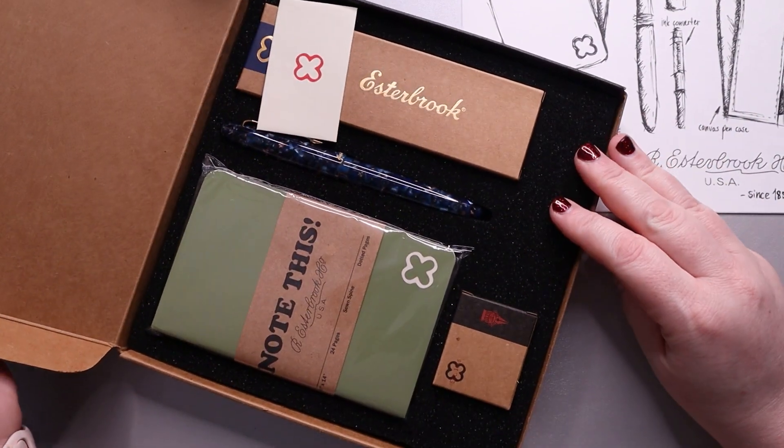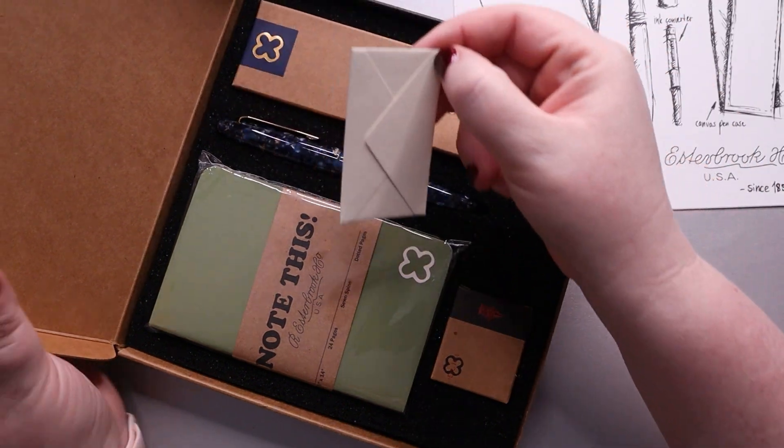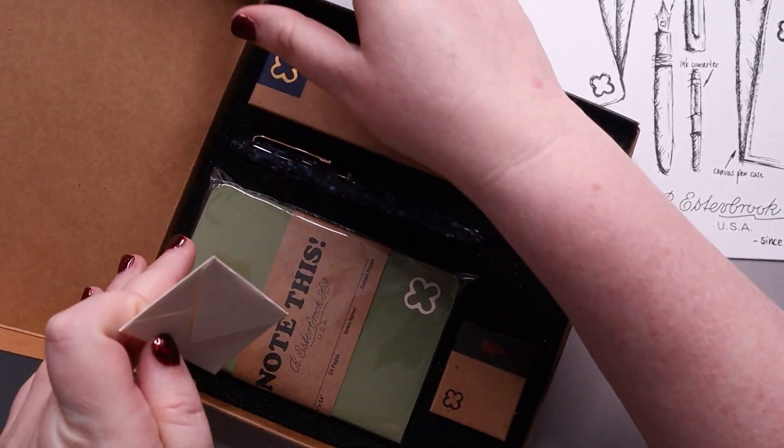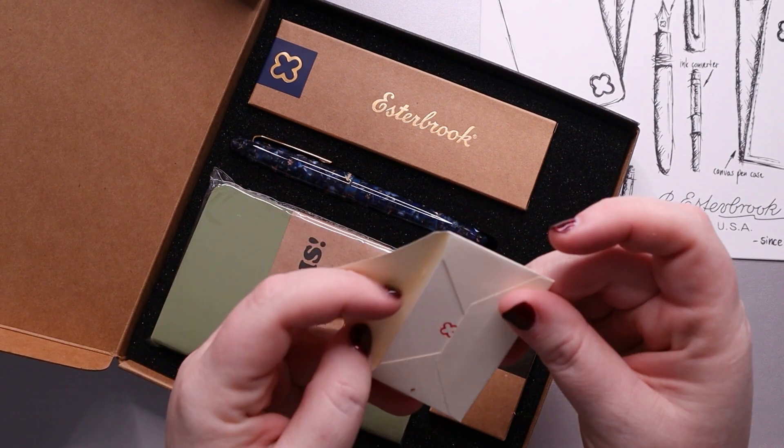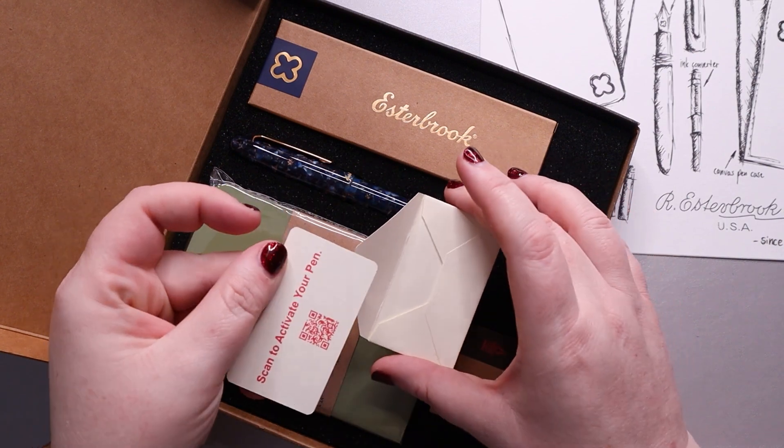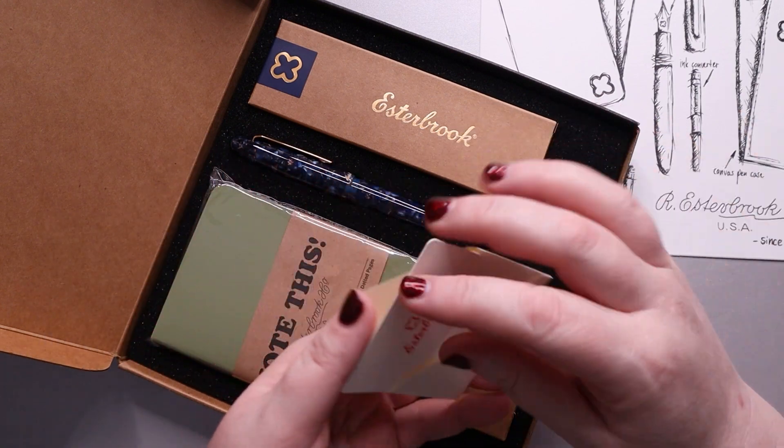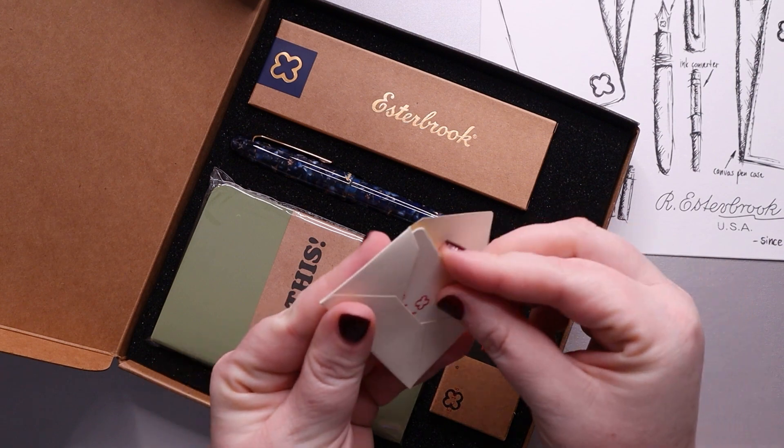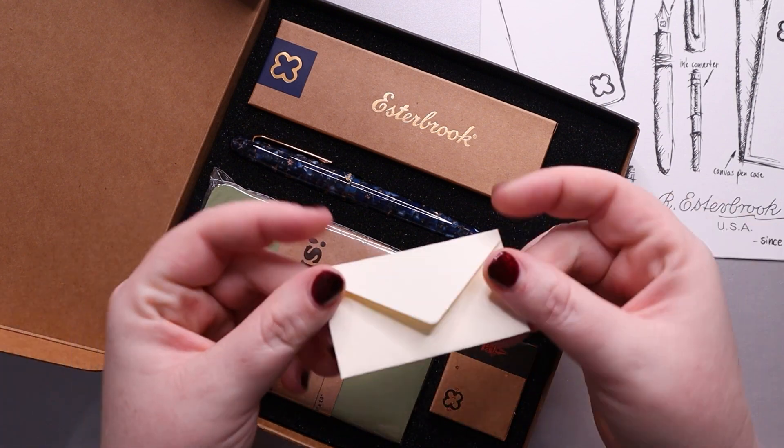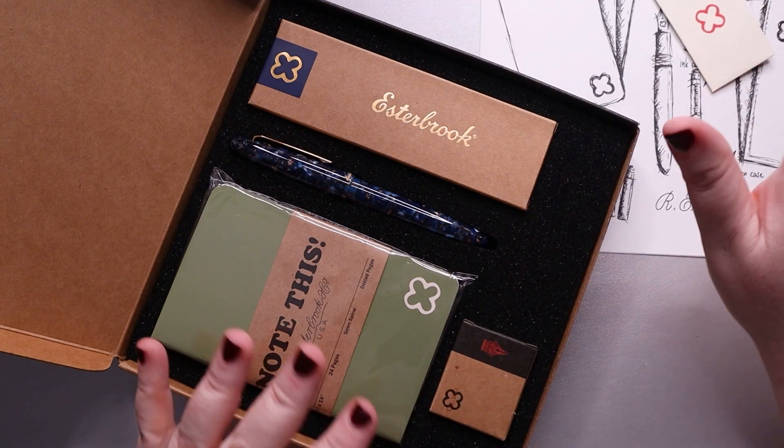And then inside the box this is what it looks like. I did get the blue one because I do have a thing for blue pens. So the first thing here, actually maybe we can bend this so it'll stay a little better, is this little card. Which I love this detail honestly. This is to kind of, I think there's a warranty that's associated with this pen because it is an expensive enough pen. So that's how you activate that. So I'll have to figure that out. And I love the little envelope. I mean the detail on it, because this is the Estabrook symbol if you haven't picked up on that. So we have that.